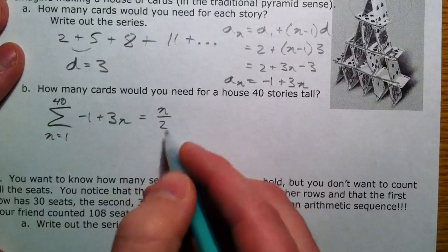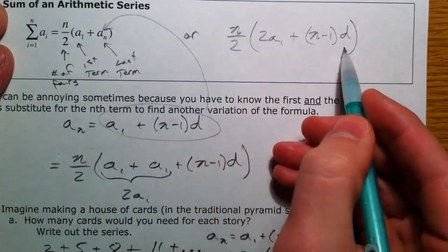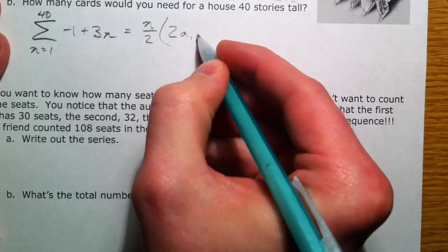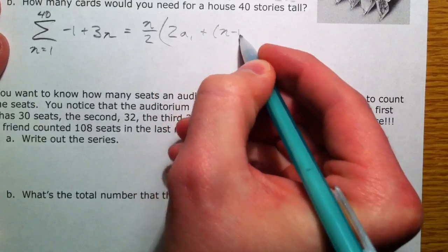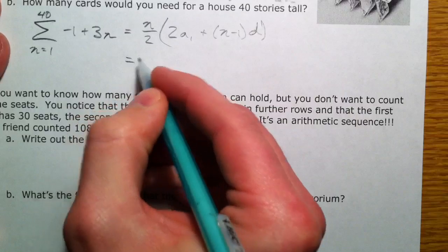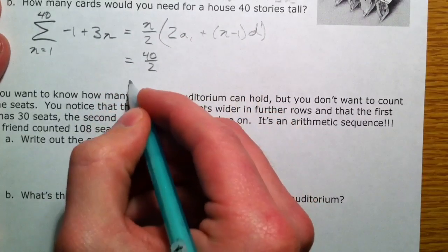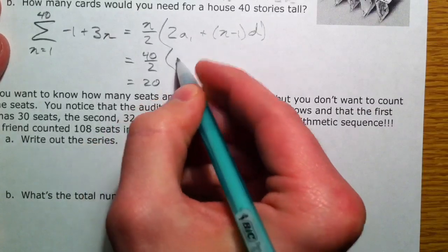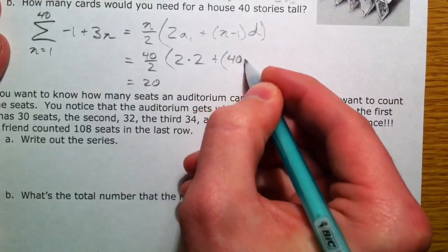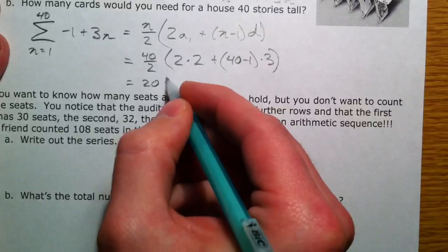n over 2, the number of pairs. And then let's use this one, the one we substituted in for. 2 times our first term. So, the number of pairs we have, 40 numbers divided by 2, so we have 20 pairs. 2 times our first term, which is 2. 40 numbers minus 1 times our common difference of 3.